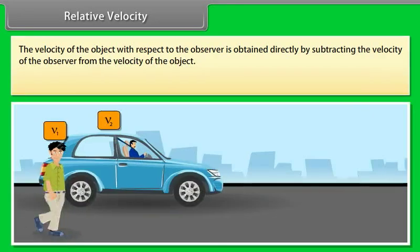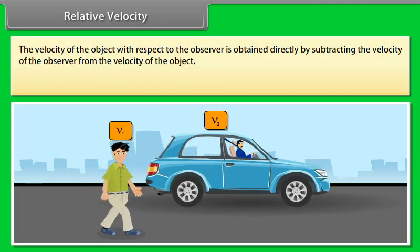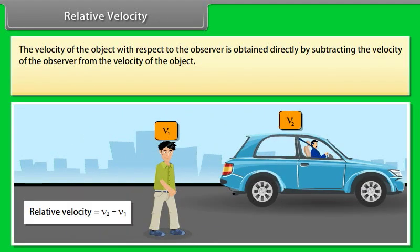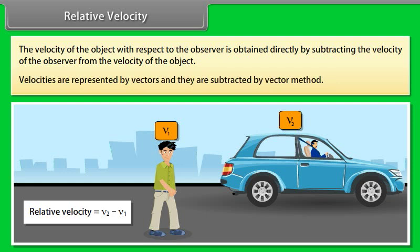Relative velocity: the velocity of an object with respect to the observer is obtained directly by subtracting the velocity of the observer from the velocity of the object. Velocities are represented by vectors and they are subtracted by the vector method.